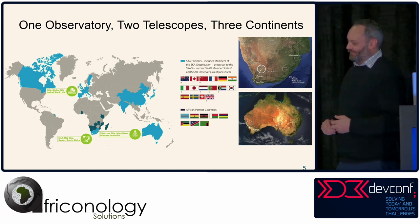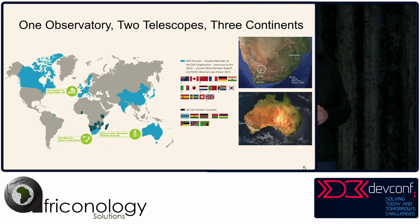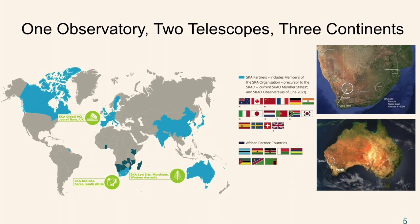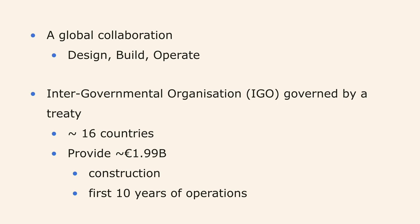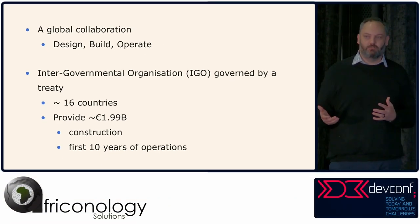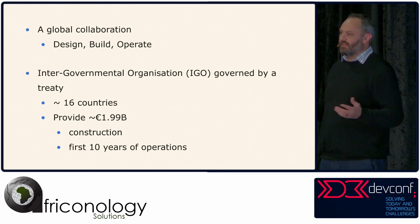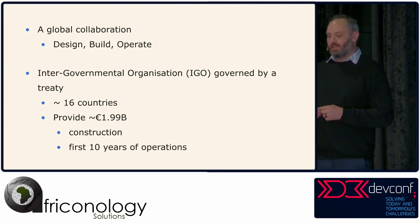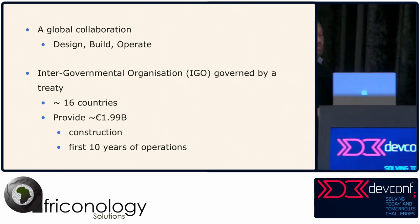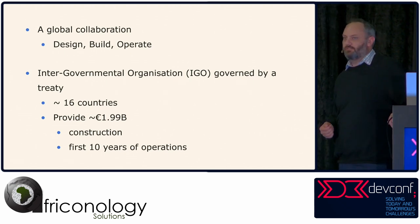The SKAO tagline is one observatory, two telescopes, and three continents. The three continents are Australia, where they're building the SKA low antenna array; Africa, where we're building dishes in the Northern Cape; and Europe, where the head office is located just outside Manchester at Jodrell Bank. The goal is to design, build, and operate the observatory. About 16 countries are involved, governed by treaties, contributing just shy of 2 billion euros — covering construction and the first 10 years of operation.